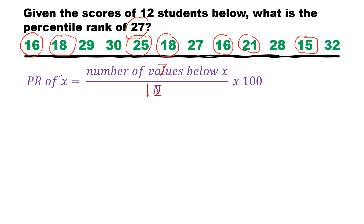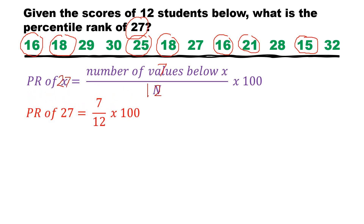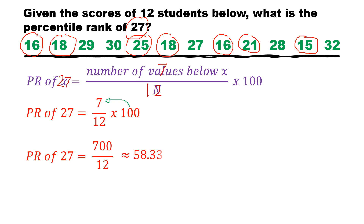We are looking for the percentile rank of 27, and there are 7 scores smaller than 27. So: PR of 27 = 7 over 12 times 100. Multiplying 100 by 7 gives us 700, and dividing 700 by 12 gives us approximately 58.33.